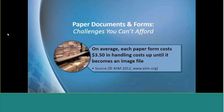Last year AIIM put together a fascinating study on the realities of dealing with paper in corporate America. The study found that on average a paper form costs companies about three dollars and fifty cents for every form processed. That three-fifty includes the printing, distribution, mailing, collection, and sorting of paper forms, but it does not include the re-keying of that paper form information, the filing, or the long-term storage and management of the resulting paper — which would more than double that figure over the total lifespan of the paper form.